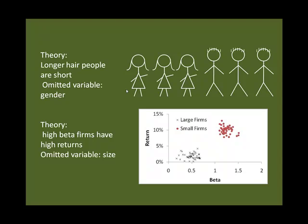This is a classic omitted variables bias that you see in lots of scientific findings. Say you had a theory that longer-haired people are shorter — you're a Martian, you look at people and say the longer-haired humans seem shorter than the short-haired people. But the omitted variable is gender: women tend to be shorter than men, and women tend to have longer hair. So if you control for gender, within gender there's no relationship between hair and height. But between genders, obviously there's a correlation — you have to control for the true factor.